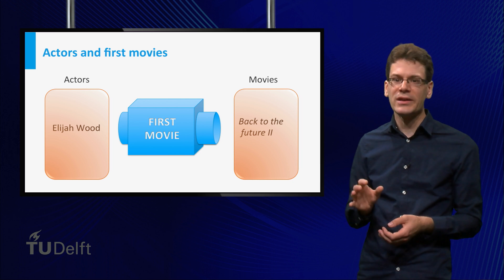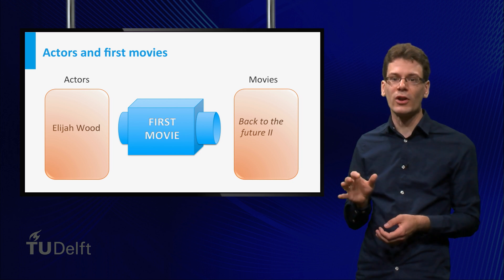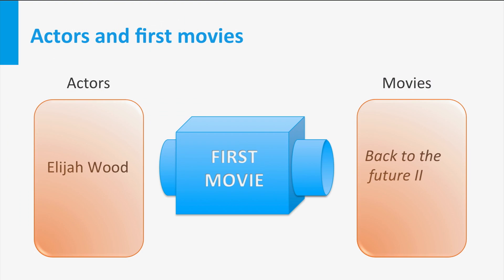To be more precise, a function consists of the following data. A set of possible inputs — in this case actor names — and this is called the domain of the function. A set in which the outputs end up — in this case movie titles — and this is called the co-domain of the function.